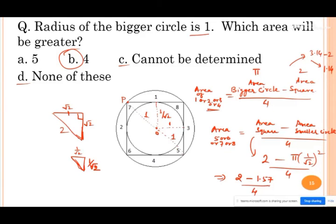And here the difference comes around one point one four, which is greater than zero point four three.